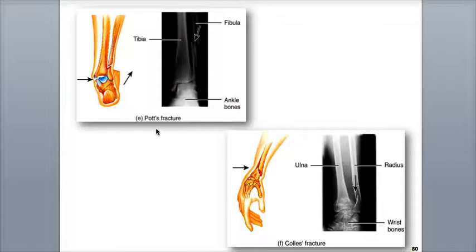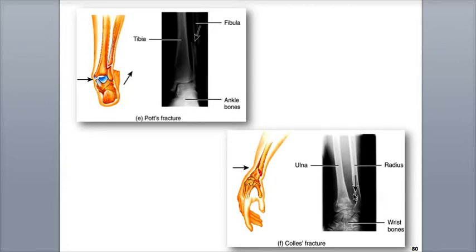A Pott's fracture is a specific break at the distal end of the fibula near the ankle, with significant injury to the distal tibia where it articulates with the foot at the talus. A Colles' fracture is a break at the distal end of the radius near the wrist.